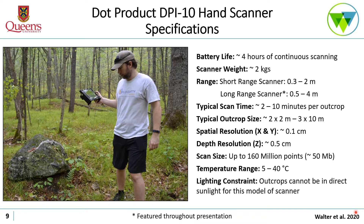A little bit about the hand scanner specifications. Battery life was roughly around four hours with continuous scanning. The scanner weight is two kilograms, which is very manageable for carrying in the field all day. We used the long-range scanner, which has a 50 centimeter to four meter acquisition range. Typical scan time is anywhere from two to ten minutes per outcrop depending on size — a two by two meter outcrop takes about two minutes, while a three meter high by ten meter long outcrop takes closer to ten minutes. Spatial resolution for the X and Y components is roughly 0.1 centimeters, while the depth resolution is approximately 0.5 centimeters.